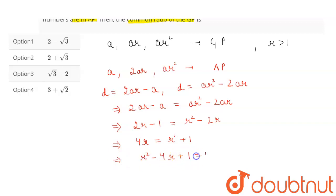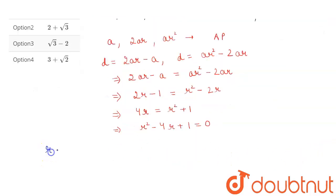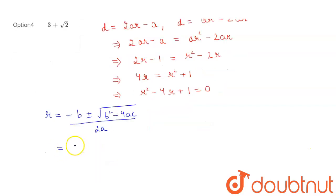Now we have to find the value of r, which will be equal to minus of b plus minus under root b square minus 4ac divided by 2a. Here our b is minus of 4, so minus into minus will be